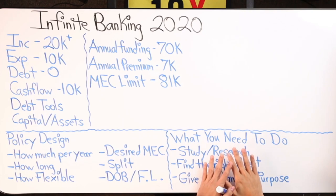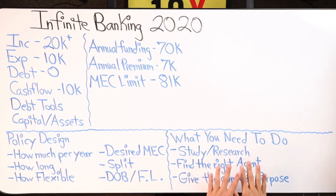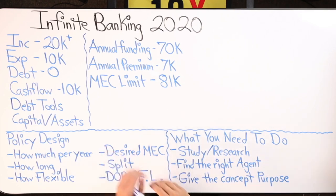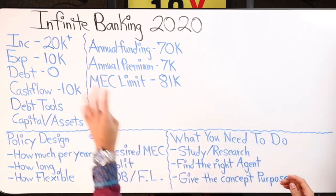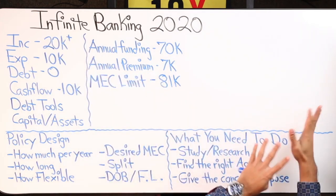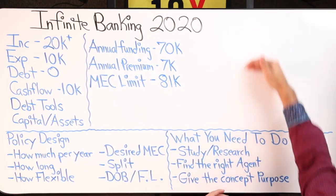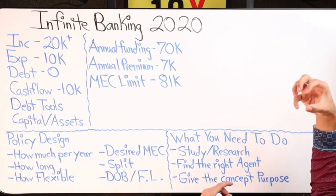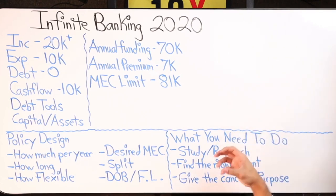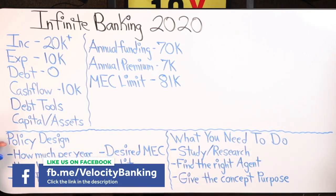Now let's say you've been doing that — watching a ton of videos, watching my videos, watching other infinite bankers on YouTube talking about the concept. 'Become your own banker,' 'family bank' — many different terms, it's all the same. The only reason they give it different names is for marketing purposes. The next thing is policy design.